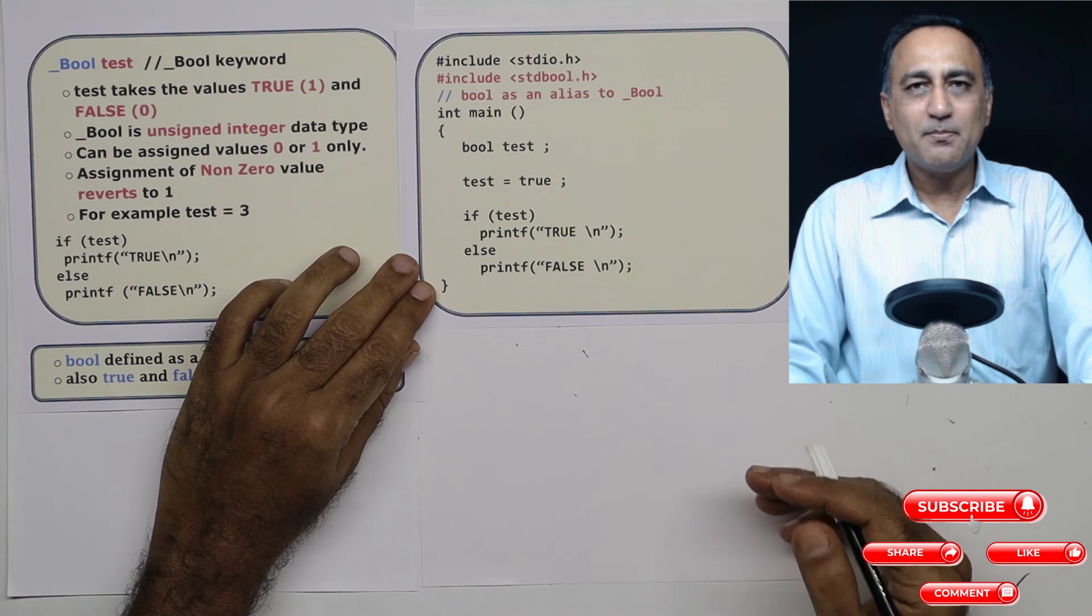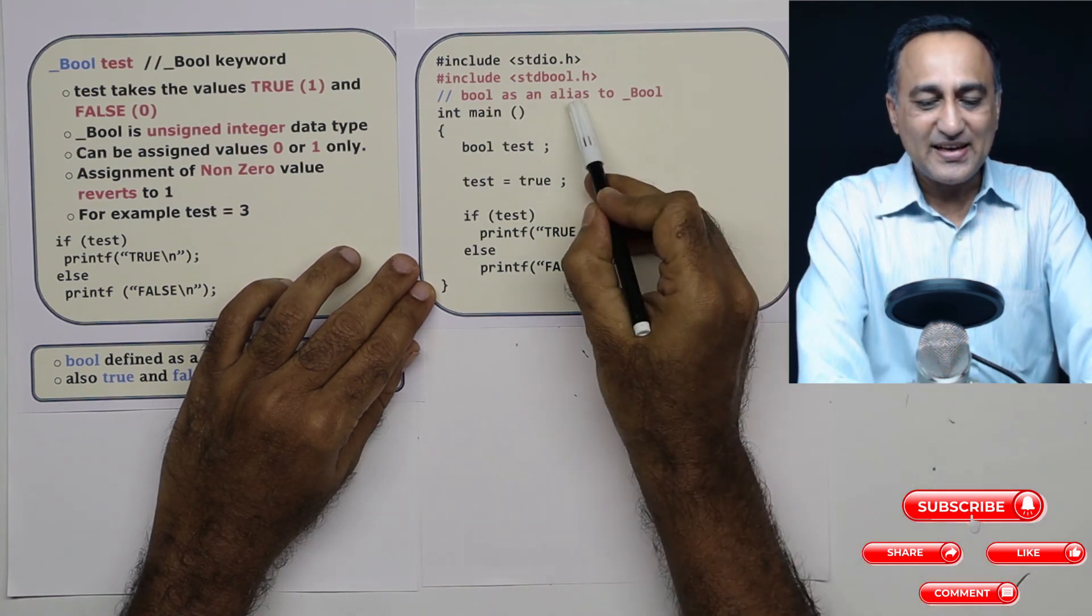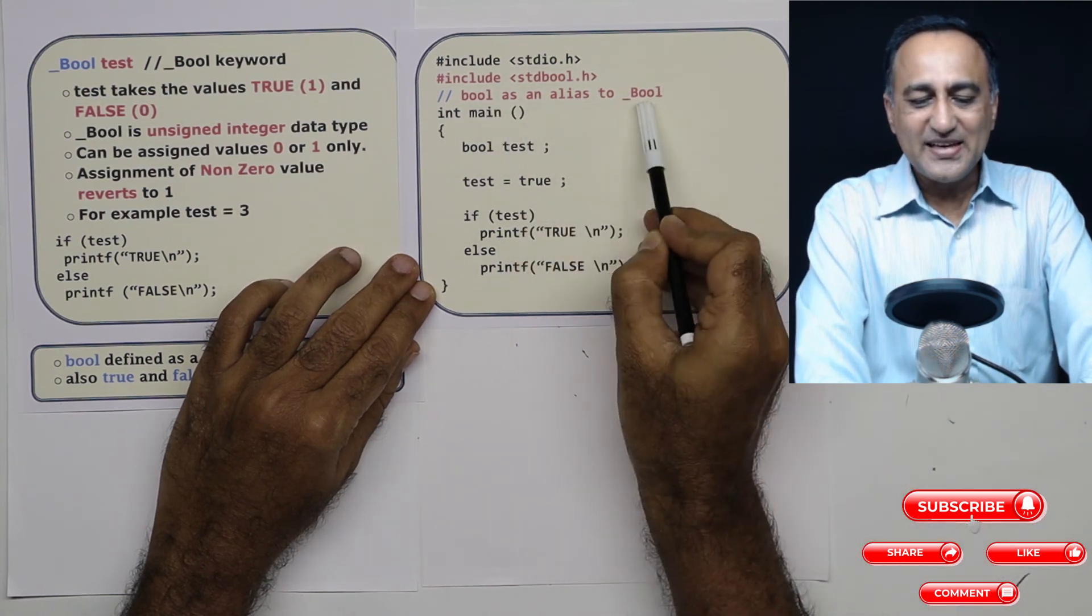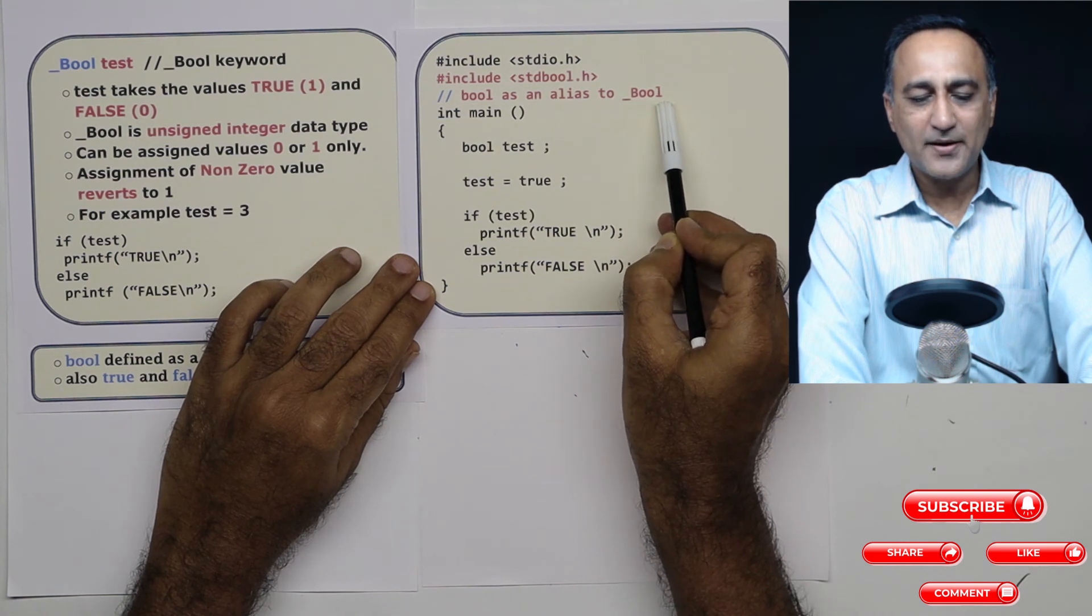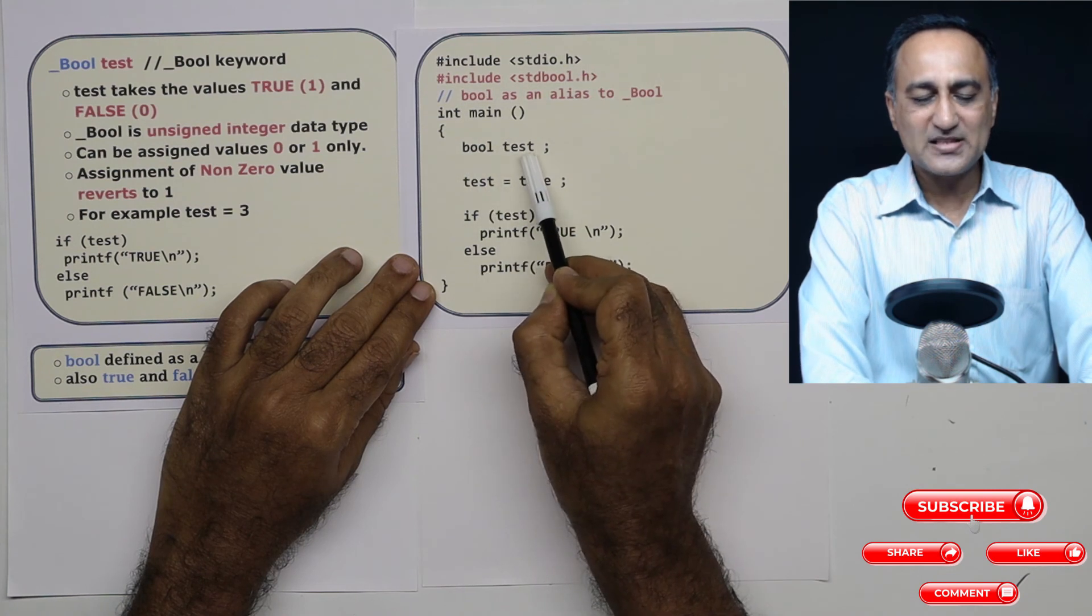What is an alias? Suppose your name is Michael, they may call you as Mike. So Mike is an alias for your name Michael. Similarly, bool is a nickname for underscore B capital O-O-L. So instead of using underscore bool, I can say bool test.